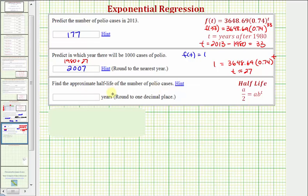Now last question, we want to find the approximate half-life of the number of polio cases. Well notice, based upon our model, the initial number of polio cases was approximately 3,648.69. And therefore, to find the half-life, we want to set f(t) equal to half this amount, which would be 3,648.69 divided by 2.